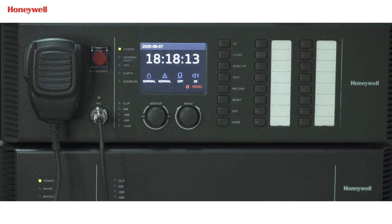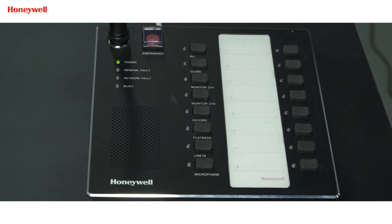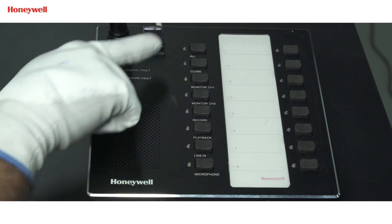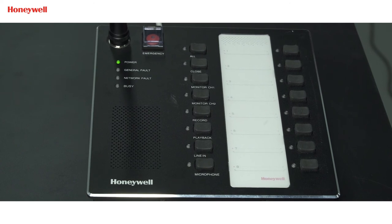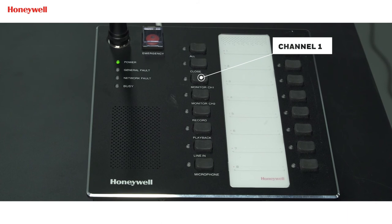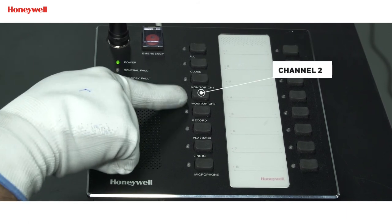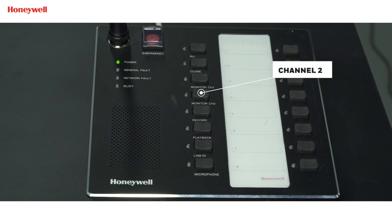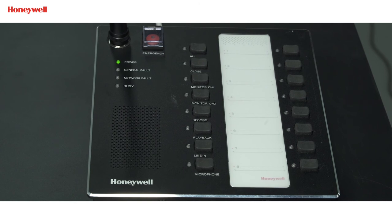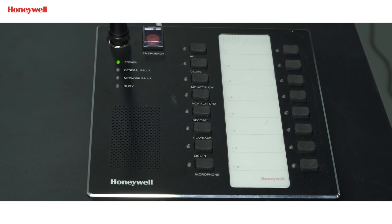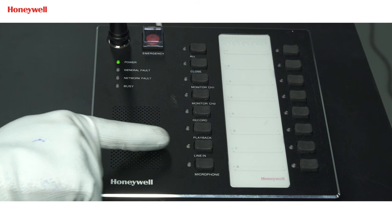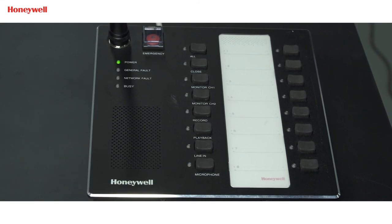Now we will cover HMC2000 callstation operation. This is the front side of the callstation. The top red button is for manual emergency. The function buttons include: the All button to select all zones; the Close button to forcibly close selected zones; Monitor CH1 for monitoring or stop monitoring CH1; Monitor CH2 for monitoring or stop monitoring CH2; the Record button to start or stop temporary recording; and the Playback button for playing temporary recorded files in the bus loudspeaker. The Line In button is to start or stop broadcasting the audio source from line in.